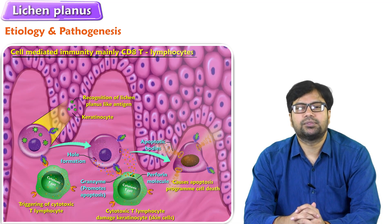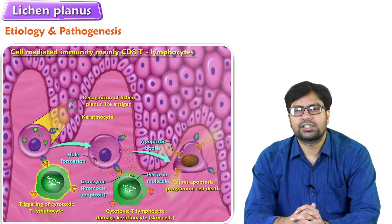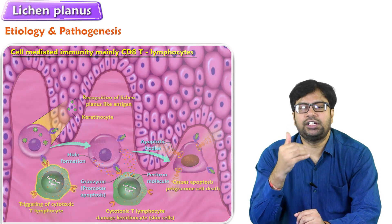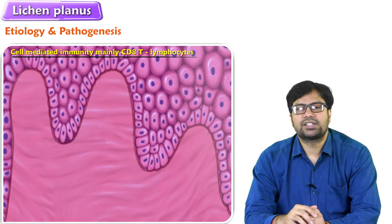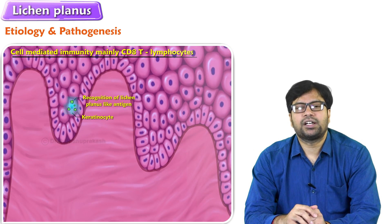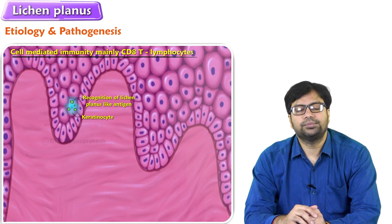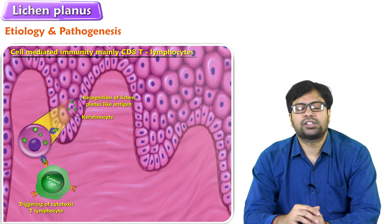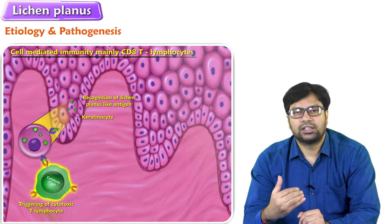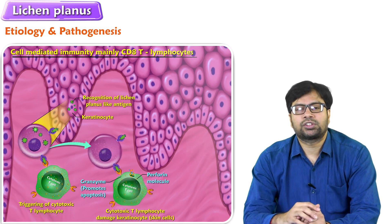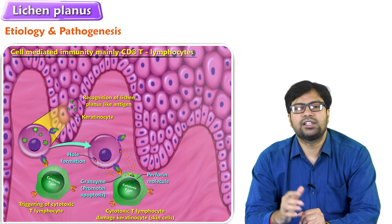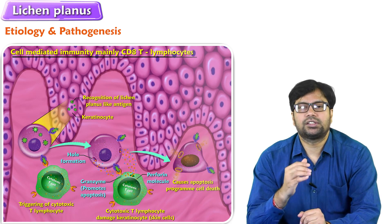What is the pathogenesis of lichen planus? It is a cell-mediated immunity, mainly CD8 T lymphocytes. We can categorize lichen planus pathogenesis into three different steps. One is recognition of the lichen planus antigen by the body on the skin. Next, after recognition, triggering of cytotoxic T lymphocytes. Third step: these cytotoxic T lymphocytes will damage the keratinocytes — the skin cells — which causes apoptosis, that is programmed cell death.